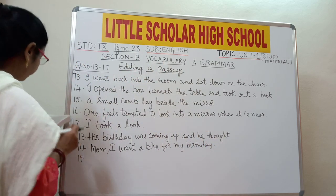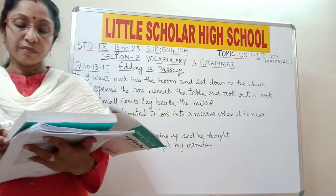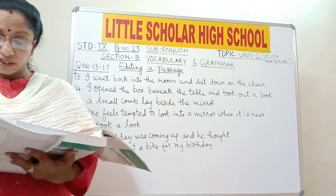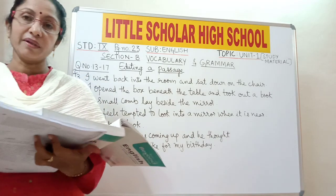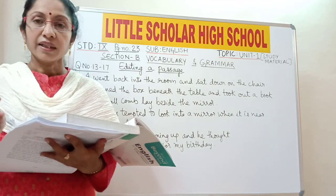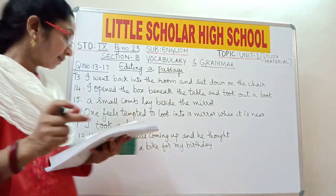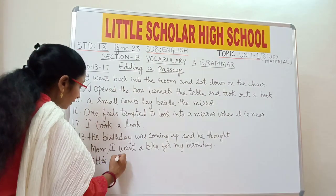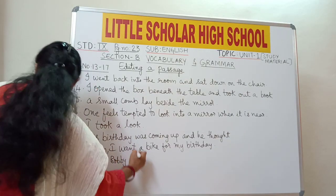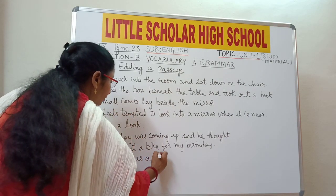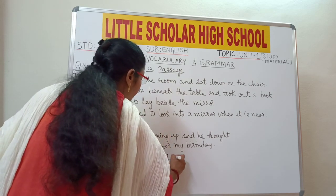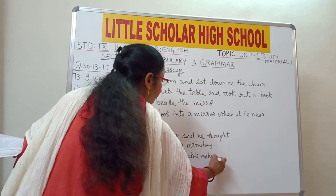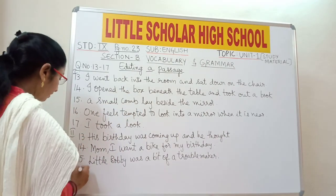Question number 15: 'Little Bobby was a bit of troublemaker.' Troublemaker represents one person — it is singular. So we should use 'a troublemaker.' Write: 'Little Bobby was a bit of a troublemaker.' You have to insert 'a' before troublemaker.